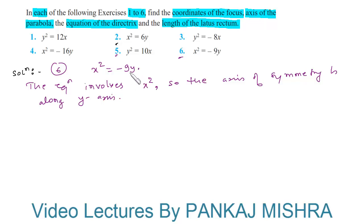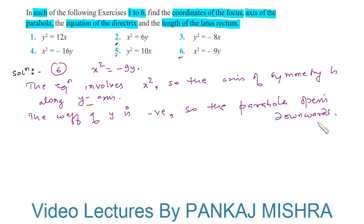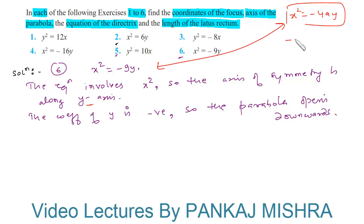The coefficient of y is negative, so the parabola opens downwards. The equation of a parabola which is symmetric along the y-axis and opens downwards is given by x² = −4ay. On comparing these two equations, −4a = −9, so a = 9/4.